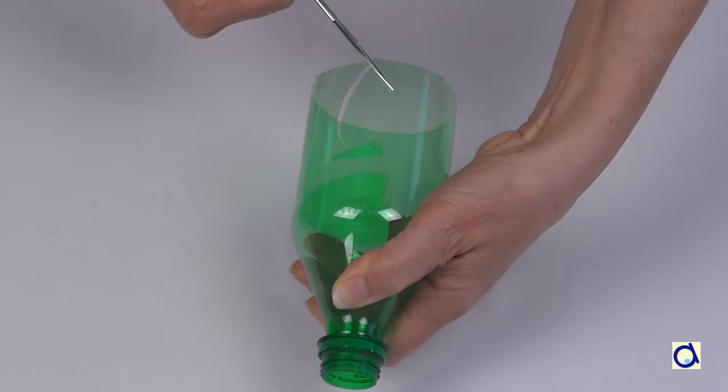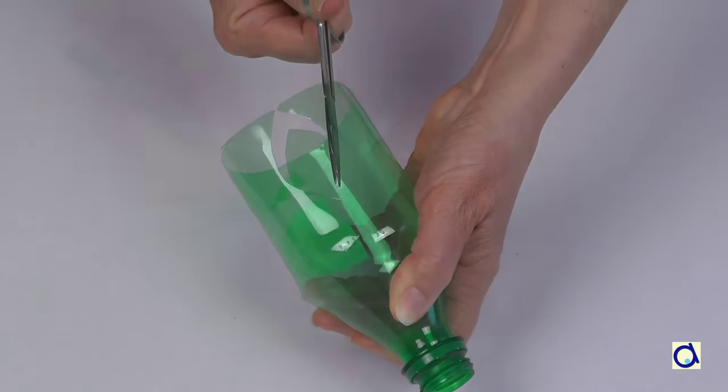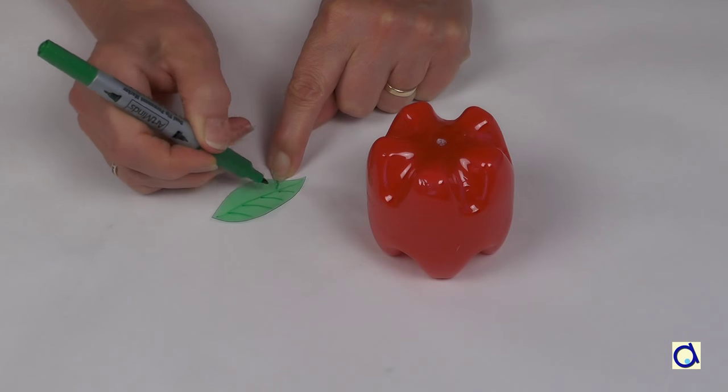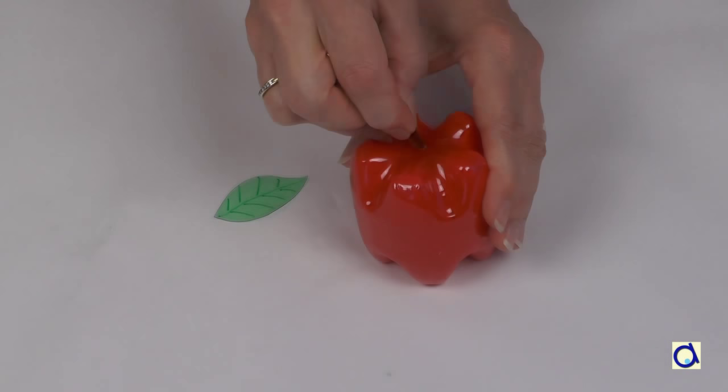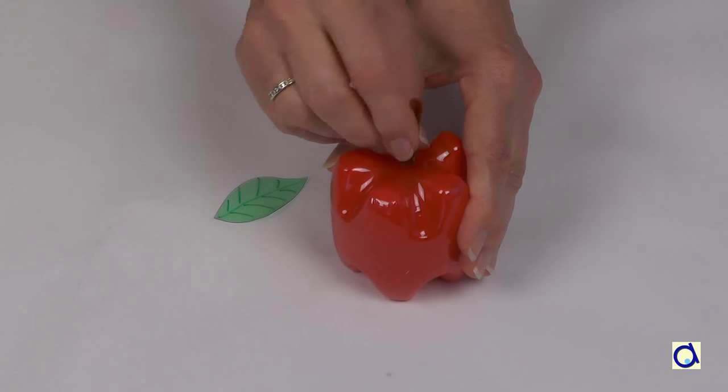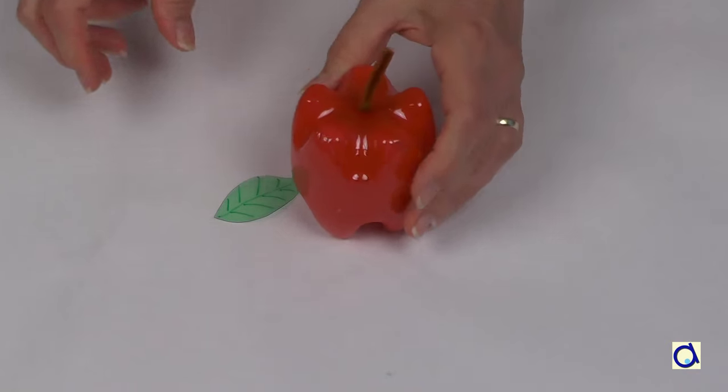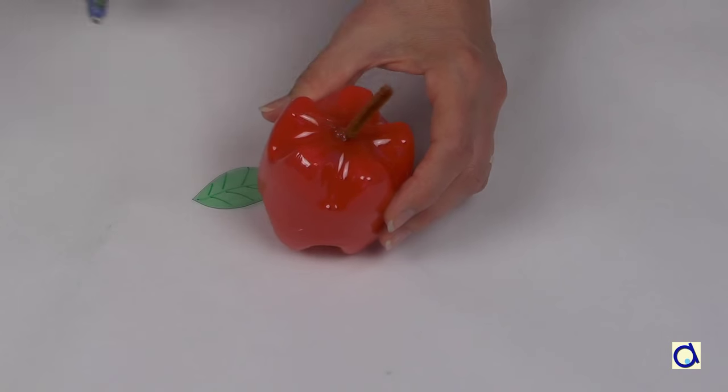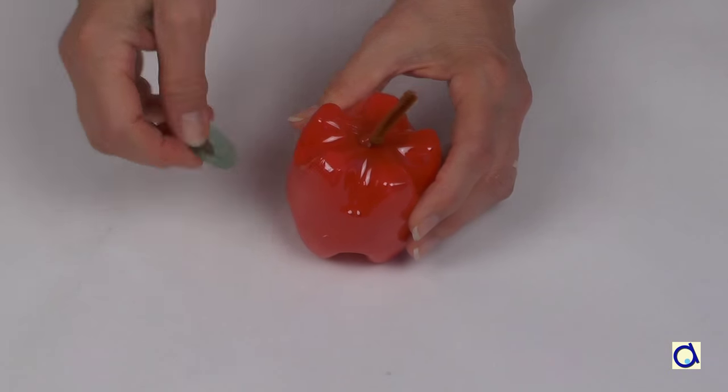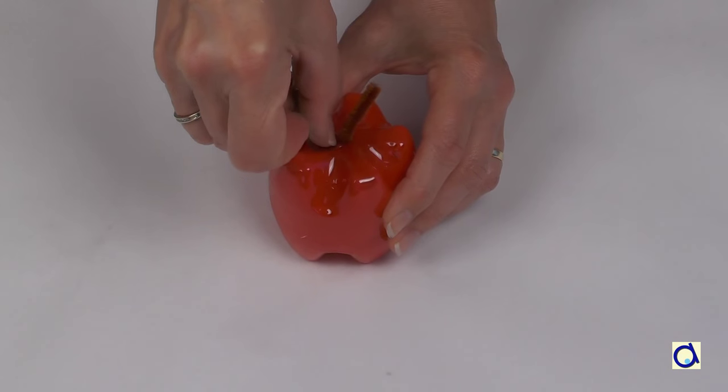Cut a leaf from the remaining part of a bottle. Draw veins with a transparent green marker. Take a piece of brown pipe cleaner to represent the stem and slide it into the small hole you made. Then glue the apple leaf with the glue gun. And now your beautiful red apple is ready!